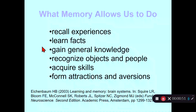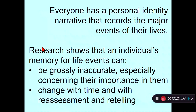I'd like to point out that the first four aspects of memory are aspects of declarative memory. Declarative memory is the kind of memory that we can declare — we can tell someone about it. So I could tell you about my trip to Paris, for example. Another very important aspect of declarative memory is the personal identity narrative, which records the major events of our lives.